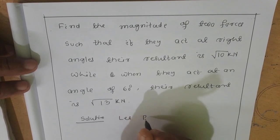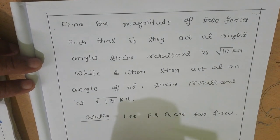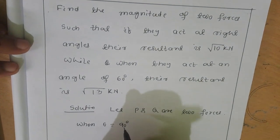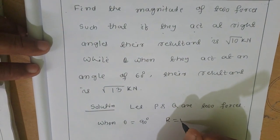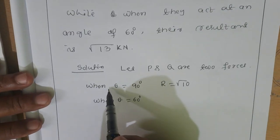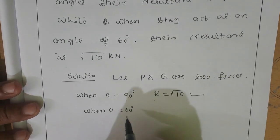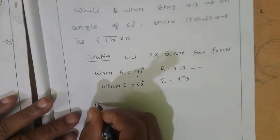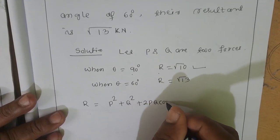Let P and Q be two forces. According to the question, when θ = 90° (they act at right angles), their resultant R = √10. When θ = 60°, their resultant R = √13. We know that R = √(P² + Q² + 2PQ cosθ).